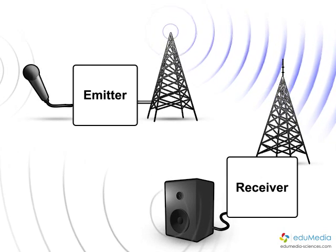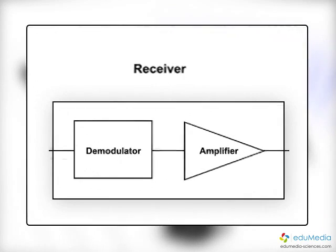A demodulator is a part of the chain of transmission of information. It is located at the point of reception.